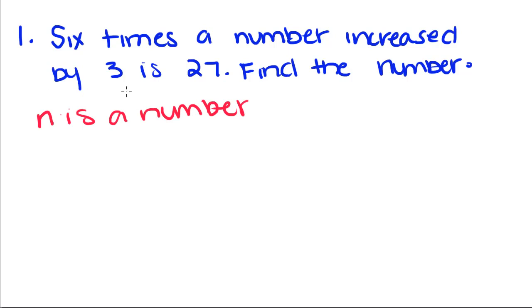So 6 times the number, 6n, increased by 3. Now increased is another word used for addition. So if we increase this by 3, we're going to add 3 to this. And once again we have is, which means equals.